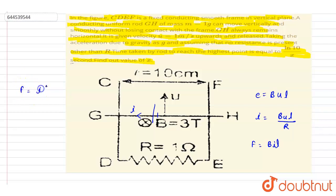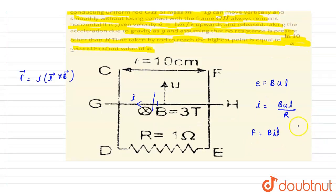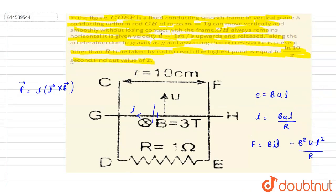so it will be in downward direction, right? L cross B. So we know that the force on a current-carrying wire is i l cross B, which will be in downward direction. So this force will be in downward direction and it will be...